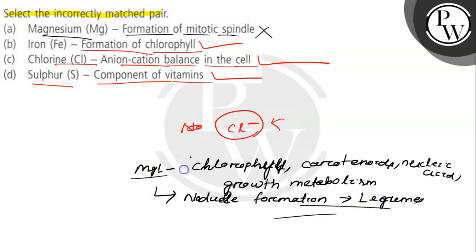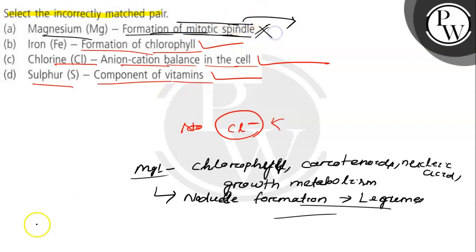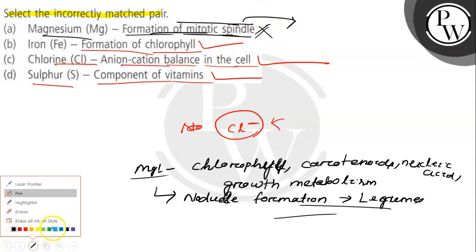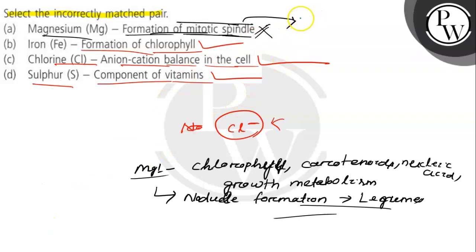So this is the main role of magnesium — not in the formation of the mitotic spindle. That is the wrong concept. The element that participates in the formation of mitotic spindle fibers is calcium (Ca²⁺). Calcium 2+ participates in the formation of mitotic spindle fiber, not magnesium.